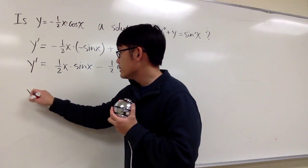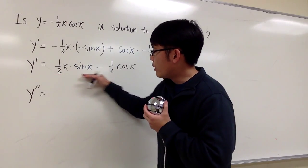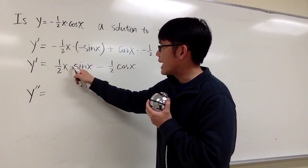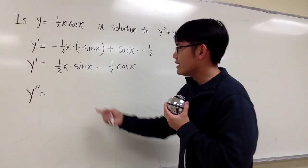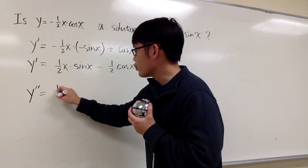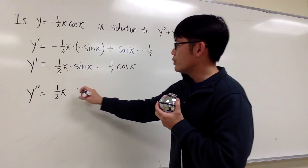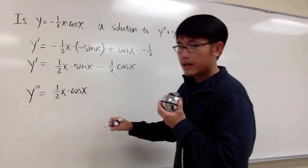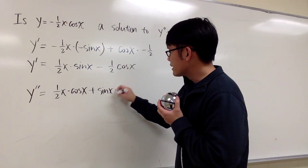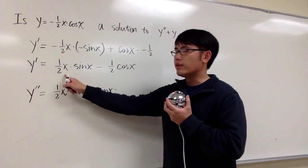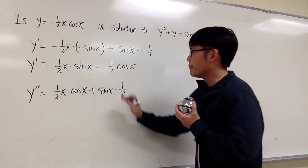Now, second derivative. For the first part we have one-half x times sine x — product rule once again. I keep the first function, one-half x, times the derivative of the second, which is going to be cosine x. And then I add the second function, which is sine x, times the derivative of the first. The derivative of one-half x is just one-half.